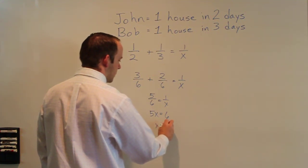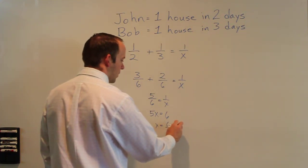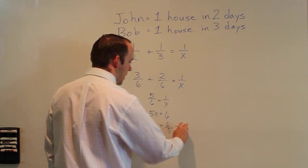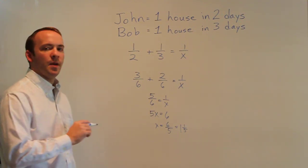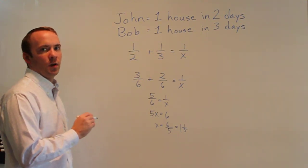X would then equal six divided by five or one and one-fifth. So working together John and Bob can paint one house in one and one-fifth days.